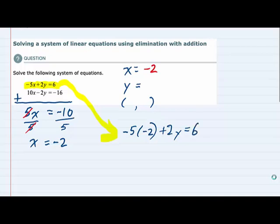Now in this new equation there's only one variable, y. We just need to simplify to get the y by itself. First, multiplying the minus 5 and the minus 2 gives us a positive 10. Bring down the 2y equals 6. We can subtract that 10 over to the other side. Minus 10 on both sides. The 10s then cancel, so we are left with 2y on the left, and 6 minus 10 on the right is going to give us a minus 4.